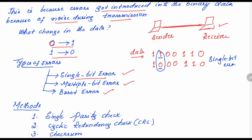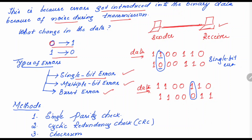We have another type of error called multiple bit error. In multiple bit errors, more than one bit gets changed. For example, suppose the data sent is 1 1 0 0 1 1 0 0. At the receiver side, 1 got changed to 0 and 0 got changed to 1 — that is what we call multiple bit errors, meaning more than one bit got changed during transmission.